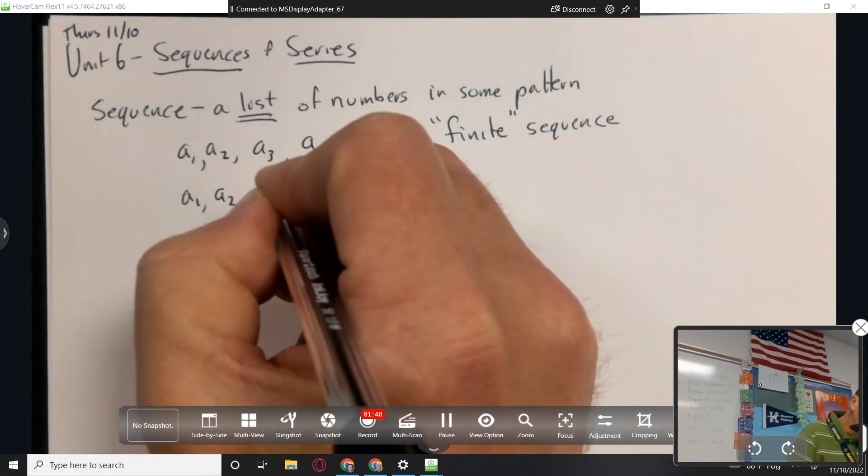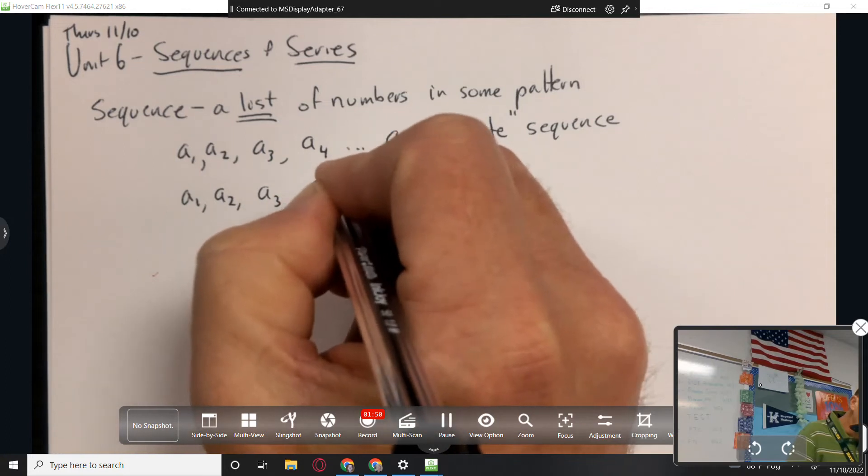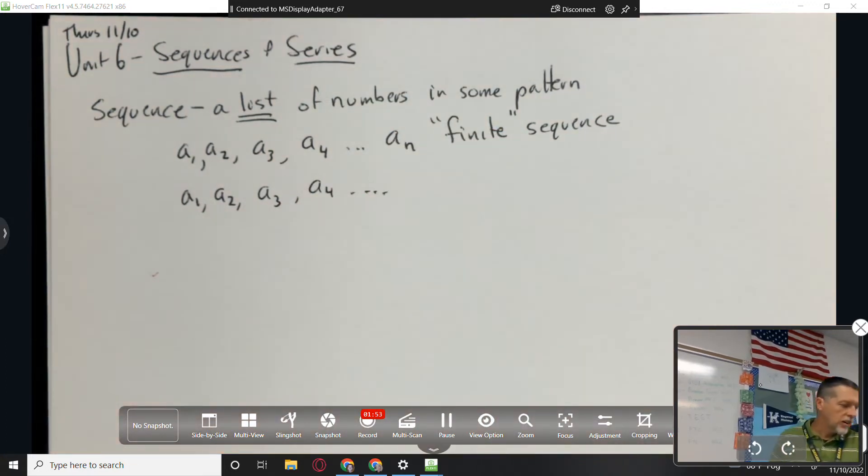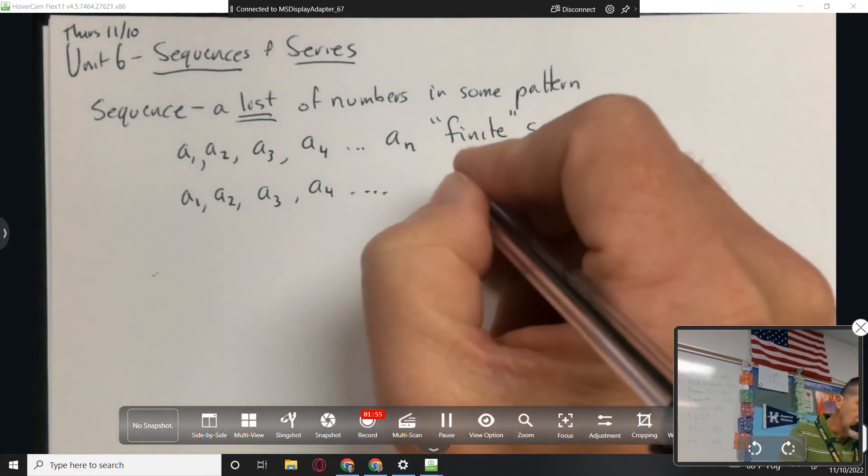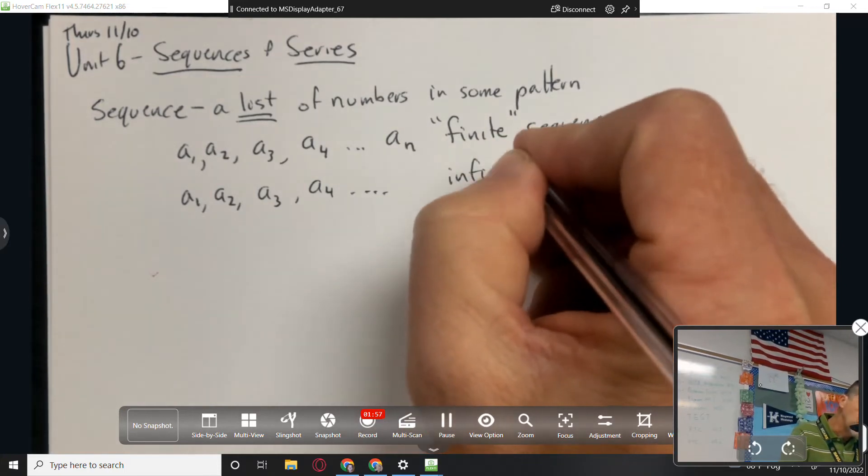In fact, if there's a last term, we say that's a finite sequence, because it ends, as opposed to, what would be the opposite of finite? Infinite, yeah, infinite. A1, A2, A3, A4, dot, dot, dot, forever and ever, it doesn't end, it's an infinite series, excuse me, an infinite sequence.